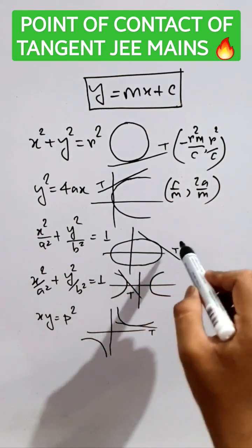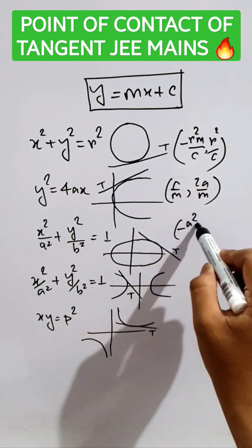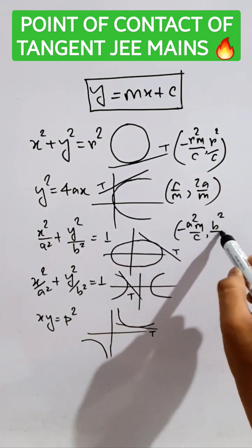Now, for the ellipse, it will be minus A square M by C, comma, B square by C.